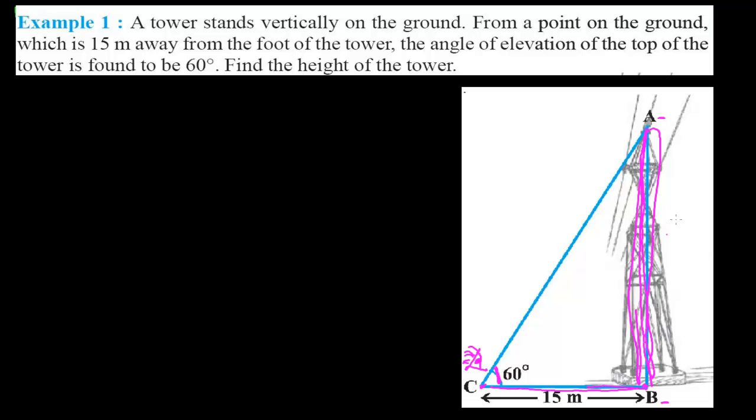Find the height of the tower means what is the length of AB. If you compare this figure with a triangle, it's a right angle triangle with hypotenuse AC, BC is our base, and AB is our height or perpendicular. This is our base where the angle is sitting.